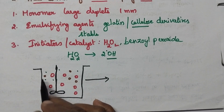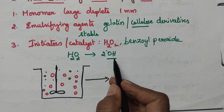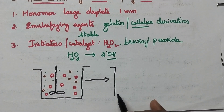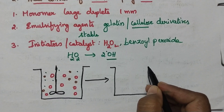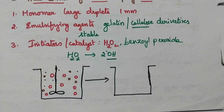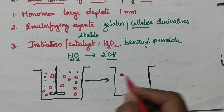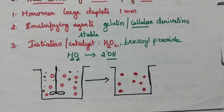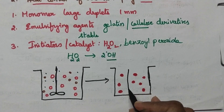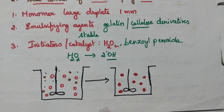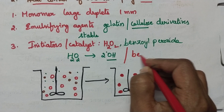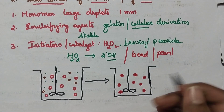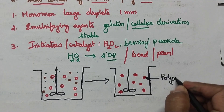The initiators generate free radicals, and hence at each monomer droplet polymerization takes place. Whenever the initiator is added, polymerization takes place at each droplet, and finally it results in the formation of polymers having the shape of a pearl or bead. Hence, suspension polymerization can also be called bead or pearl polymerization. The polymer is obtained in the form of a pearl or bead, which is why it is called bead or pearl polymerization.